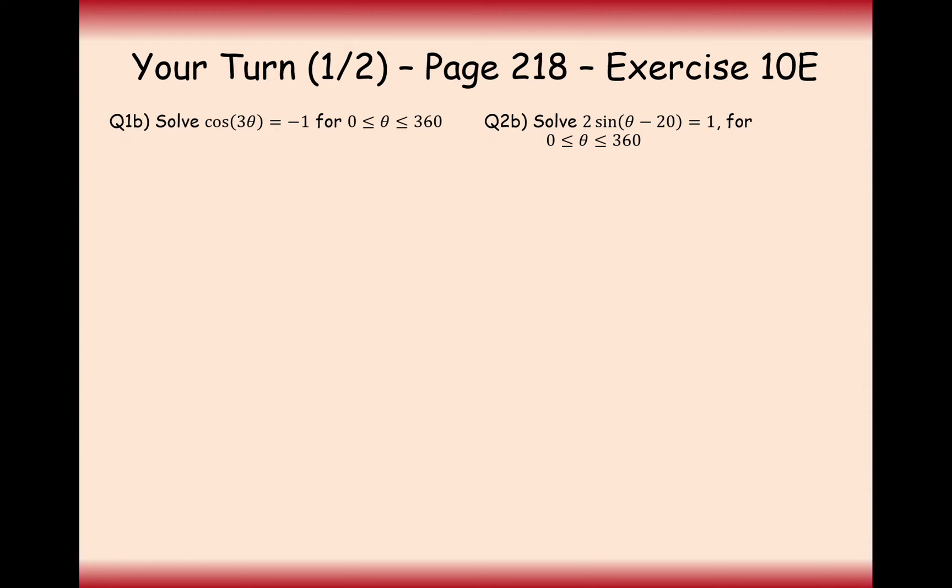Let's have a go at question 1b then. We've got cos of 3θ here, so this is going to mean that our graph needs to go up to 3 times 360, which is 1080. If we can imagine what's going to happen on the graph here, cos starts at 0, so we go down, hit 360, go down, hit 720, and go down and hit 1080.